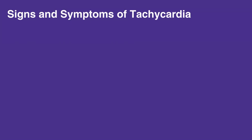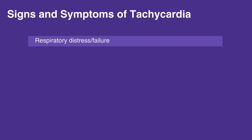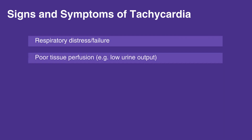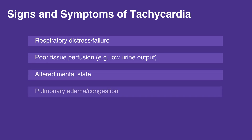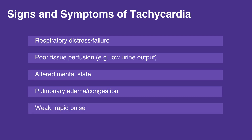Signs and symptoms of tachycardia include respiratory distress or failure, poor tissue perfusion — for example, low urine output — altered mental state, pulmonary edema or congestion, and a weak, rapid pulse.